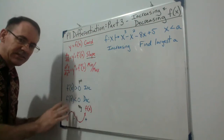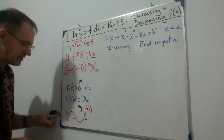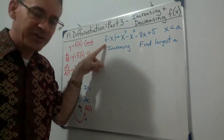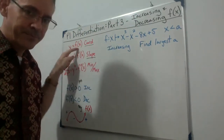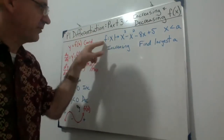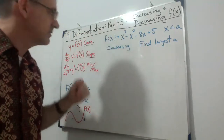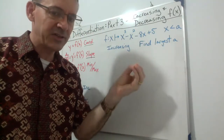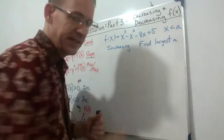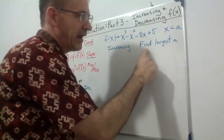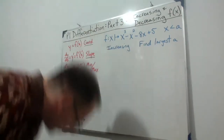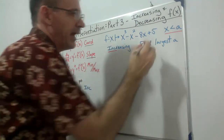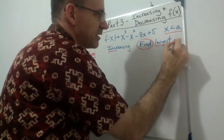Here is our first example. Notice they use a different notation here — I don't use this myself, but it's the same thing as f(x). They give us a cubic function with a domain statement, and it says find the largest value of a, stated to be increasing. So we have an increasing function and we want to find the largest value of a.